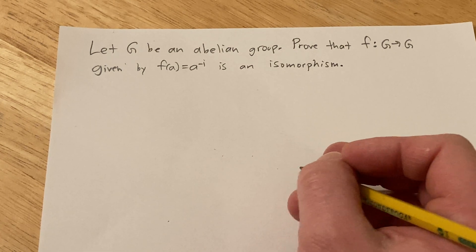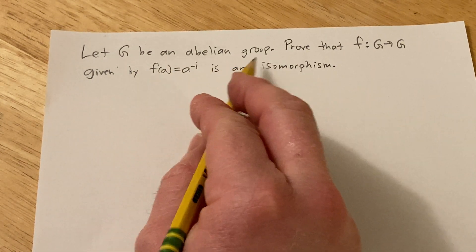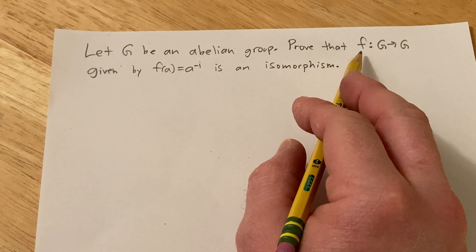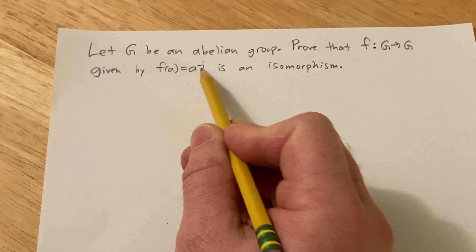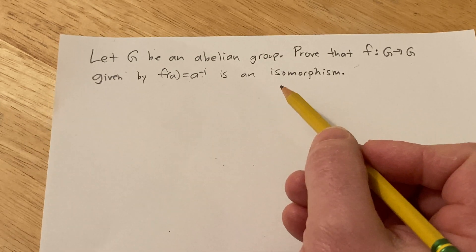Hello, in this problem we're going to do a proof. We're told that G is abelian and we have to prove that this map from G into G given by f(a) equals a to the negative one is an isomorphism.